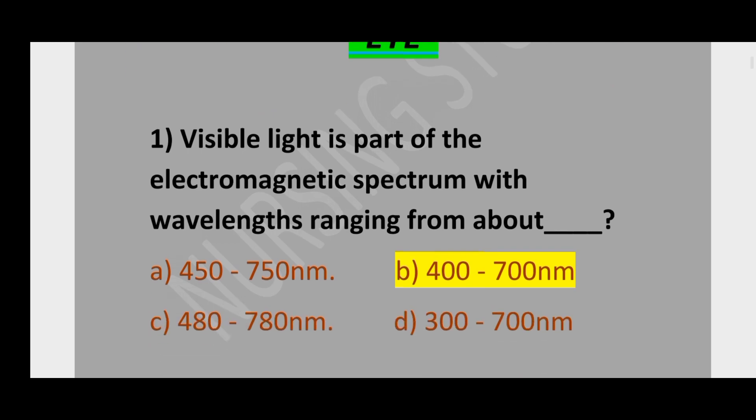Question number 1. Visible light is a part of the electromagnetic spectrum with wavelength ranging from about: option A, 450 to 750 nanometers; option B, 400 to 700 nanometers; option C, 480 to 780 nanometers; option D, 300 to 700 nanometers. The correct option is 400 to 700 nanometers.